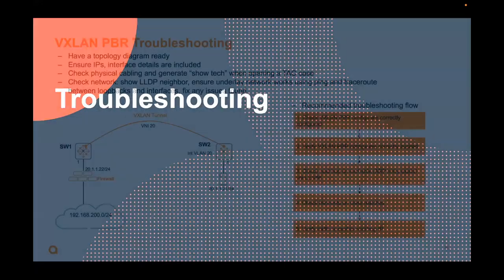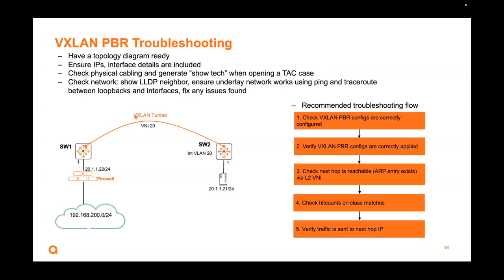Troubleshooting: always have a topology diagram ready. Ensure your IP addresses are stated and interface details are included. Check the physical cabling. Generate a show-tech when opening a case. Because this is an overlay, you need to check that your underlay works before the overlay can function. Make sure the underlay network works using ping and traceroute. Make sure the loopbacks are reachable. Fix underlay issues first before proceeding with VXLAN PBR — if the underlay is broken, don't even bother with VXLAN at all.